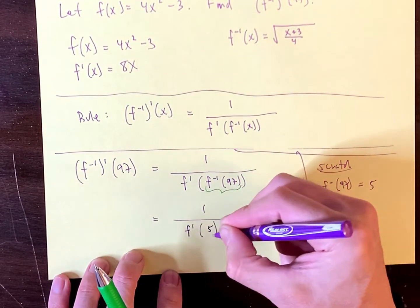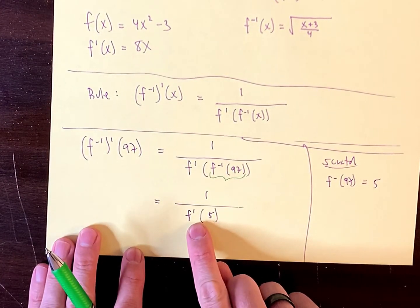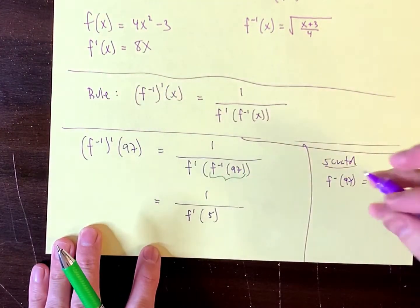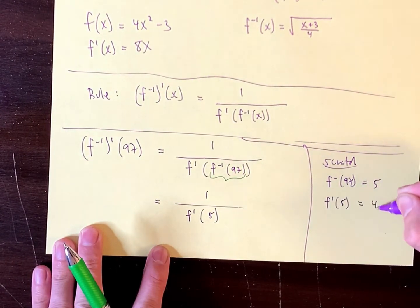So this is f prime of 5. And now this is what I want. And this is not bad, because look, you have the derivative right there. It's been looking at you for a few minutes now. So the derivative at 5 equals 40.